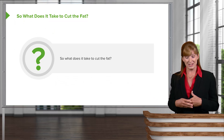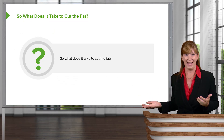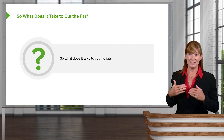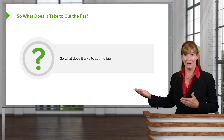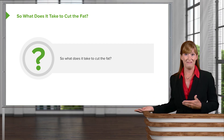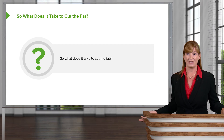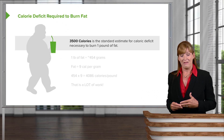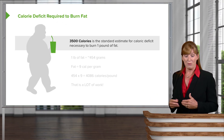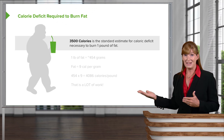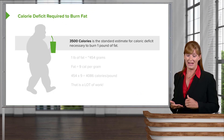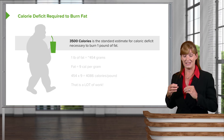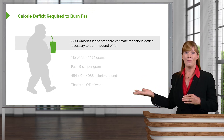Now let's consider what it takes to cut the fat. We all know that having a higher caloric output than caloric intake creates a caloric deficit. But how much does it take to actually lose a pound of fat? The number that's reported is 3,500 calories — a pretty standard number you should commit to memory. It's the standard estimate for the caloric deficit required to burn one pound of fat.